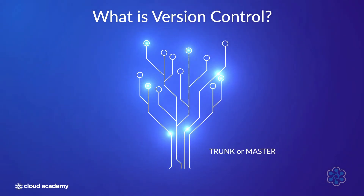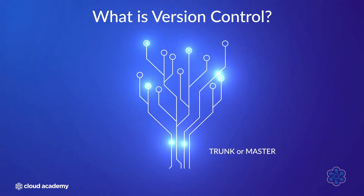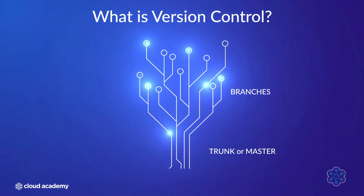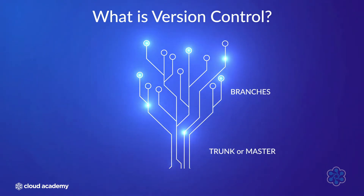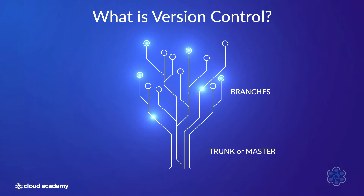The main thread of code development is called the trunk, often referred to as the master trunk, while deviations or splits from that are called branches. Because developers aren't arborists, the master trunk is often called the main branch.